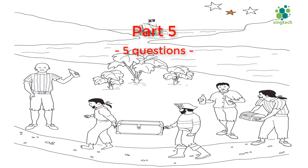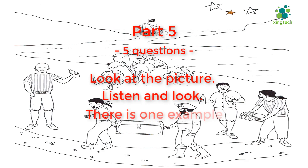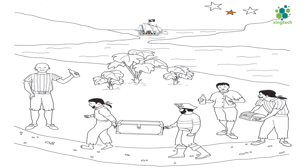Part 5. Look at the picture. Listen and look. There is one example. Look at this picture of pirates with some treasure. Oh yes. Can I colour something? Yes. Can you see the stars? Yes. Shall I colour one orange? OK. Colour the smallest star. Can you see the orange star? This is an example. Now you listen and colour and draw.